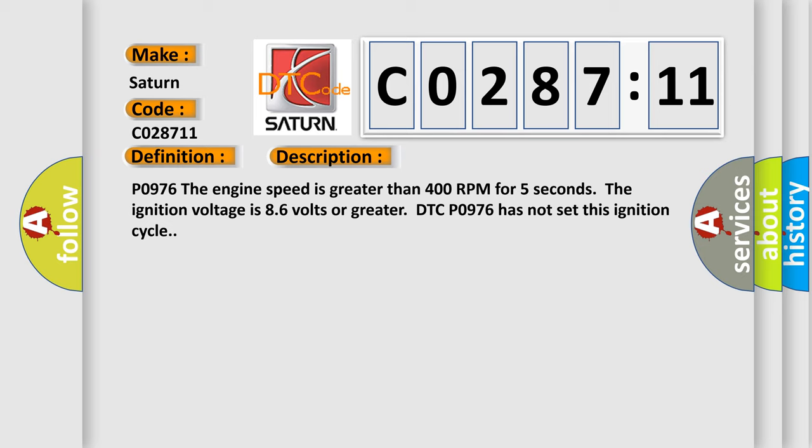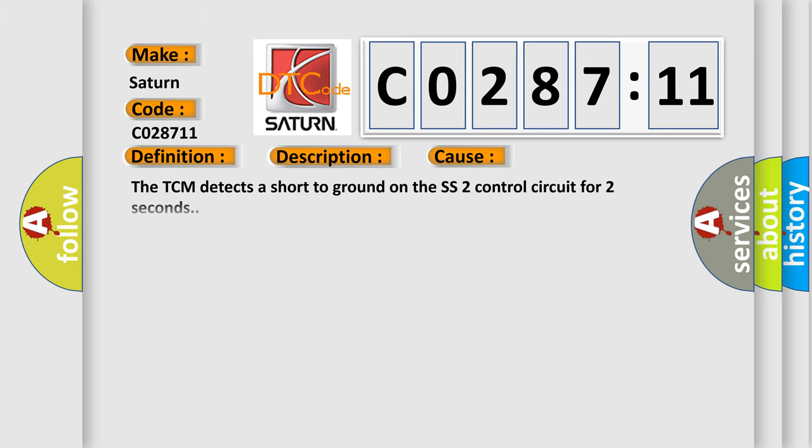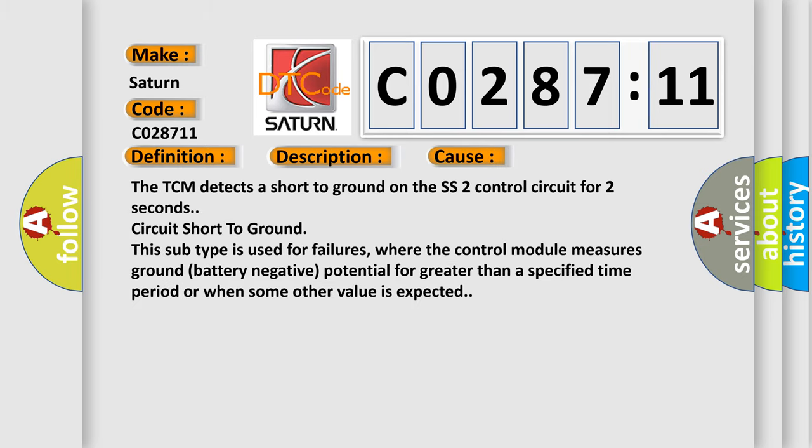This diagnostic error occurs most often in these cases. The TCM detects a short to ground on the SS2 control circuit for 2 seconds, circuit short to ground. This subtype is used for failures where the control module measures ground battery negative potential for greater than a specified time period or when some other value is expected.